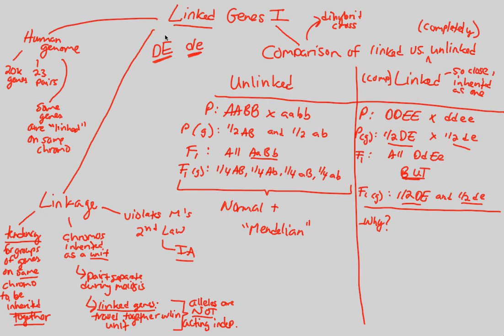For this reason, we have the exact same gametes in F1 as we do in the parent generation. They are exactly the same because of the complete linkage of capital D with capital E and lowercase d with lowercase e. This is something that's seen on this chromosome. Let's imagine that this is a chromosome right here. They're always so close to each other on this chromosome that they're always linked and inherited together as one.